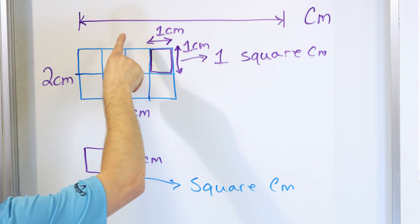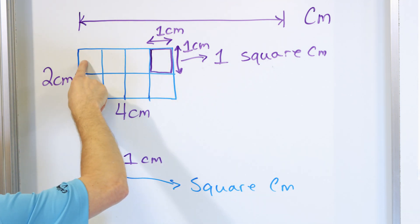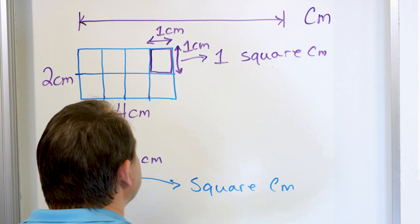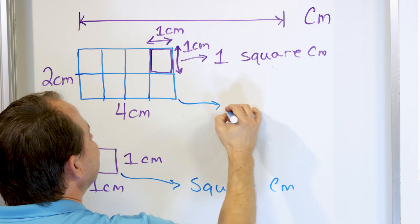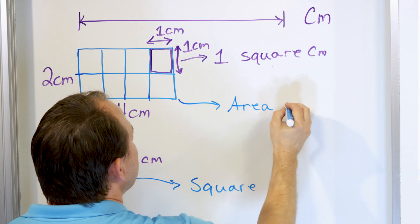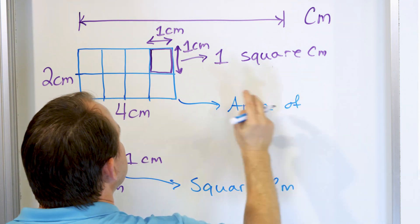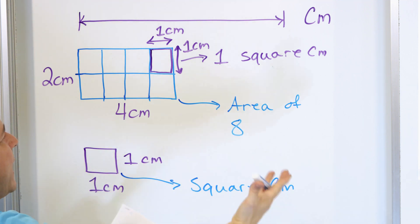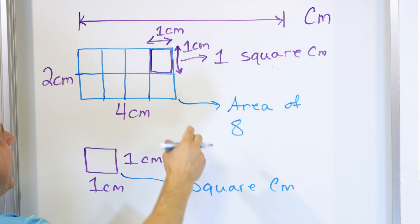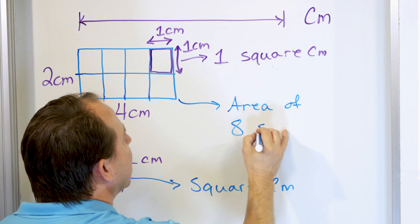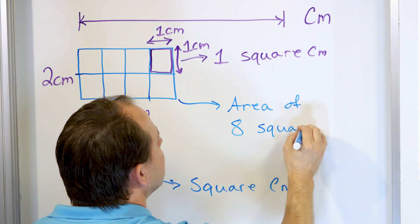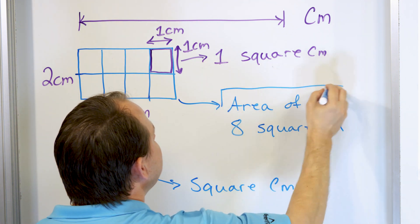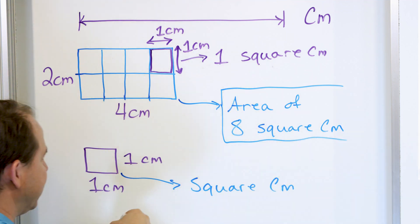All you have to do is count them. Here's one square centimeter, two, three, four, five, six, seven, eight. So this figure actually has an area of eight. But eight what? We're measuring how many square centimeters fit inside. So the area of this rectangle is eight square centimeters.